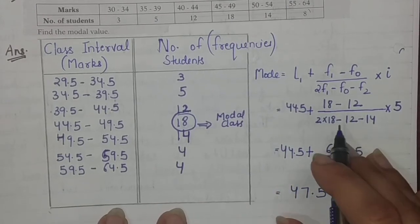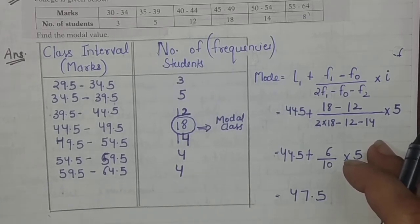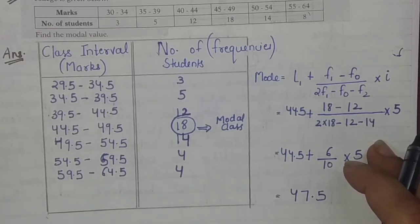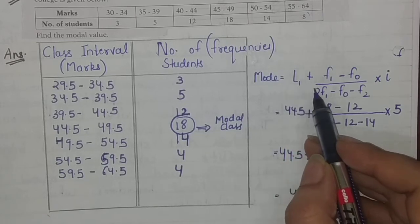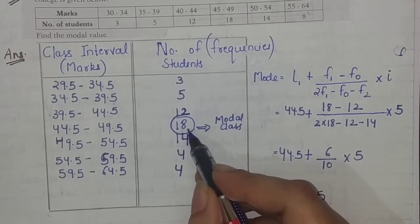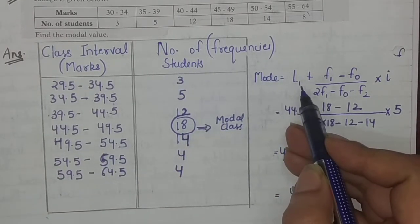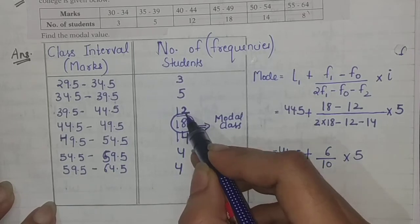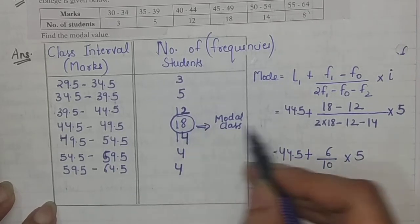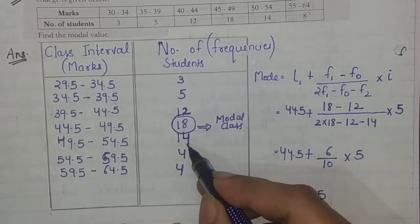Although we are learning the graphical method, whenever you have a median, mode, or quartile calculation using a graph, for the safer side it is always advisable to also calculate it using the formula so you can cross-check that your graph is correct. The mode formula uses the lower limit of the modal class. The modal class is 44.5 to 49.5, so: lower limit plus (frequency of modal class 18 minus frequency of preceding class), giving us a mode of 44.5.